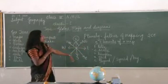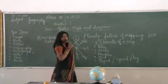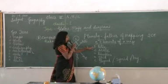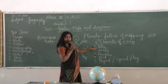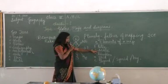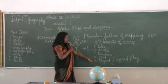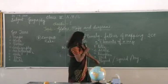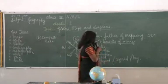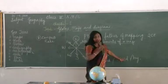So what are the five elements of a map? First it's the title, then the scale, then direction, grid, and legend — that is, symbols and keys.